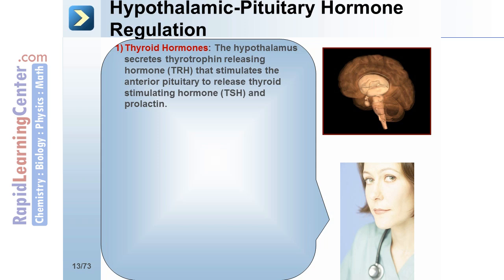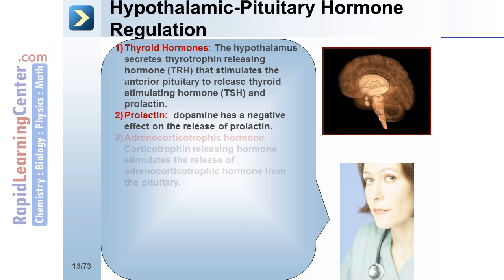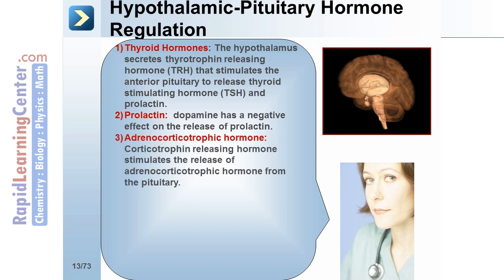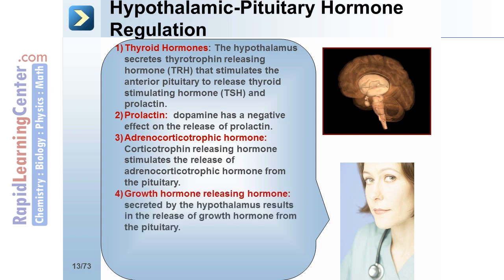TSH stimulates the release of thyroid hormone from the thyroid gland. The release of thyroid hormone has a negative feedback effect on the anterior pituitary. Dopamine has a negative effect on the release of prolactin. Corticotrophin-releasing hormone stimulates the release of adrenocorticotrophic hormone from the pituitary. Growth hormone-releasing hormone secreted by the hypothalamus results in the release of growth hormone from the pituitary.